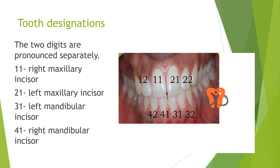The two digits are pronounced separately — this is '1, 1', not 'eleven'. The first 1 represents the right maxillary quadrant and the second 1 represents the central incisor. So '1, 2' means right maxillary lateral incisor. '2, 1' means left maxillary central incisor, and '2, 2' means left maxillary lateral incisor. Similarly, '3, 1' is left mandibular central incisor, and '4, 1' is right mandibular central incisor. One digit represents the quadrant and the other represents the tooth.